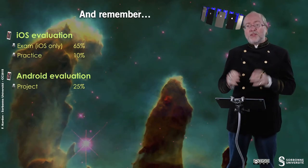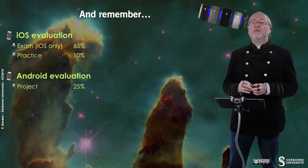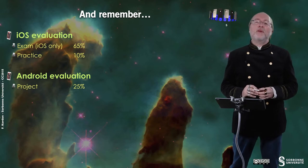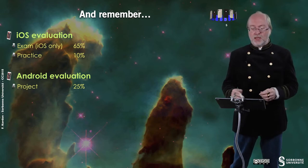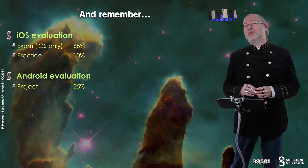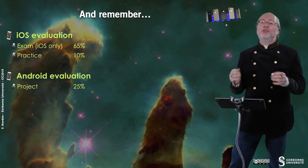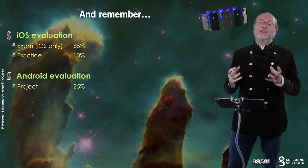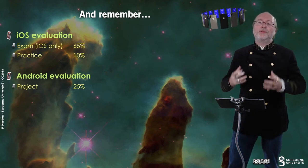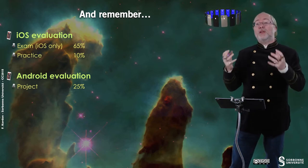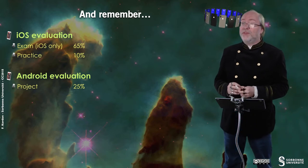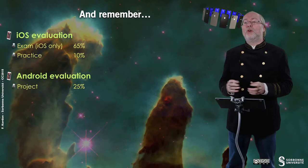Last thing: you should remember that the iOS evaluation — the examination that will deal only with the iOS aspect — is 65% of the grading. Then you have practice, which is 10% of the grading, a bit of extra to help you be fluent during the exam. And the Android evaluation will be done through a project that is 25% of the grading.